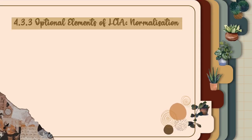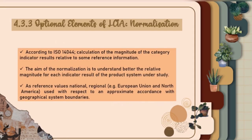Next, optional elements of LCIA. Normalization. According to ISO 14,044, normalization is the calculation of the magnitude of the category indicator results relative to some reference information. The aim of normalization is to better understand the relative magnitude for each indicator result of the product system under study. As reference values, national or regional references — for example, European Union and North America — are used with respect to approximate accordance with geographical system boundaries.